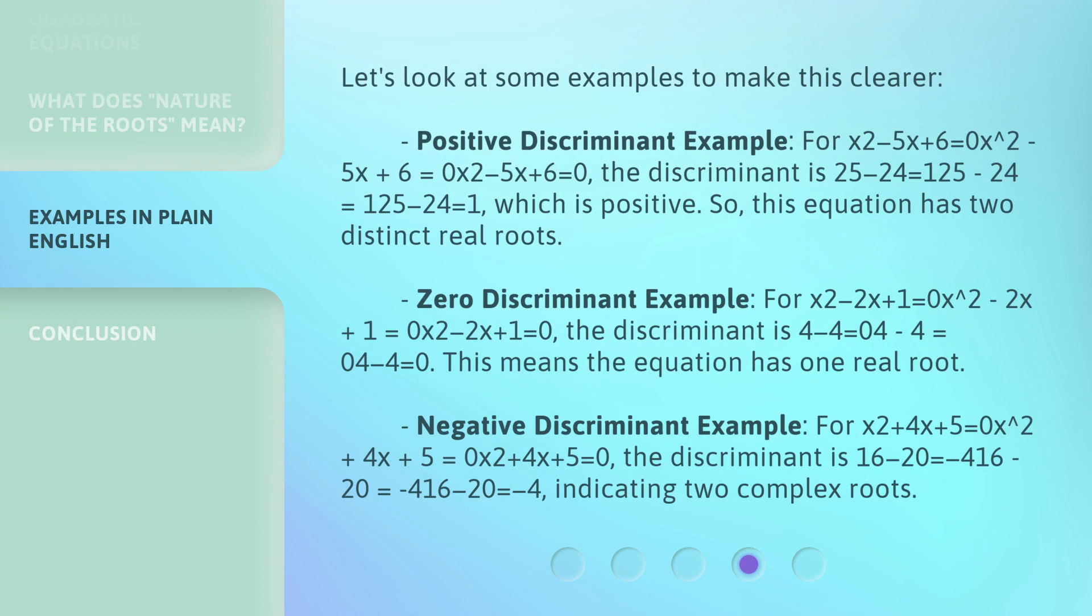Let's look at some examples to make this clearer. Positive discriminant example: For x² - 5x + 6 = 0, the discriminant is 25 - 24 = 1, which is positive. So, this equation has two distinct real roots.